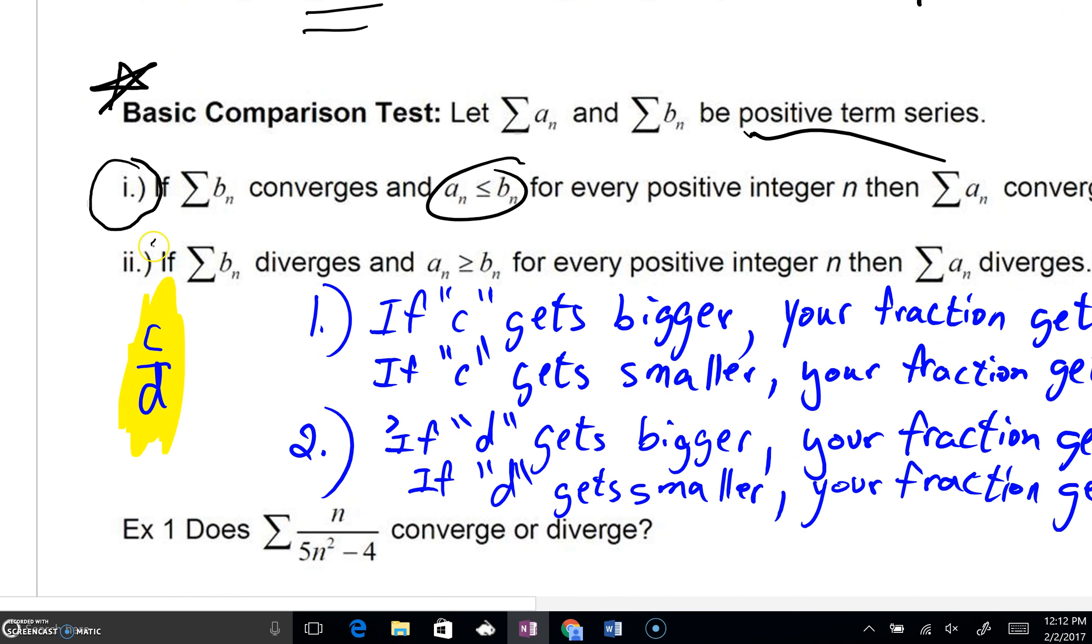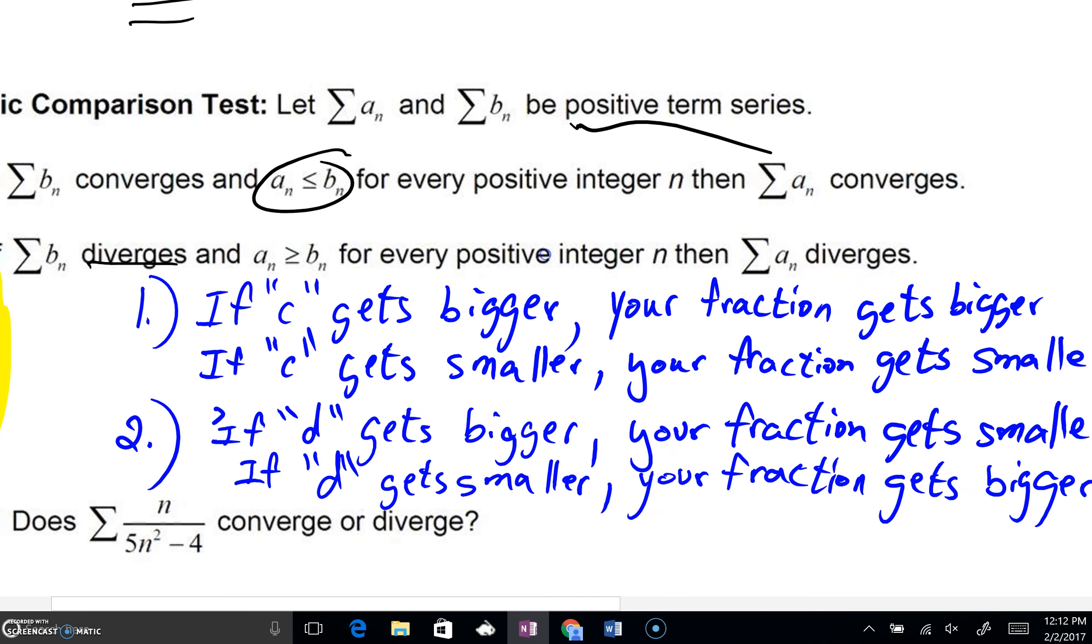As we look at number two, this is the second component. If B sub n diverges and A sub n is greater than B sub n term by term, for every positive integer n this is holding true, A sub n must diverge also.